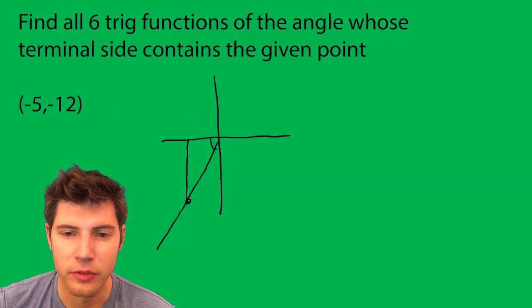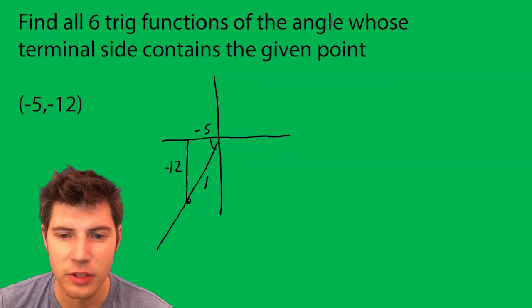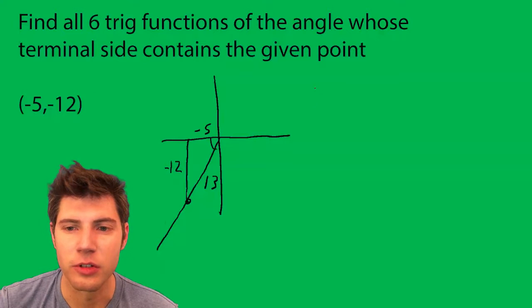Negative 5 refers to our x value, negative 12 is right there, and then special right triangle, this is 13. Let's find the six trig functions.